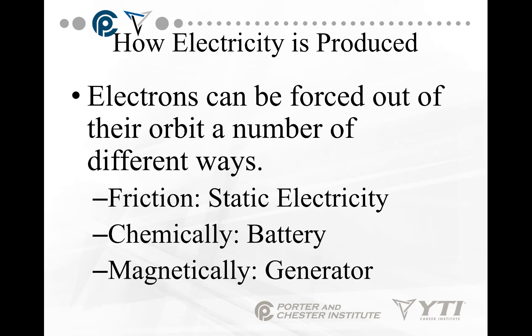Most of our mass production of electricity happens magnetically. A generator — you spin a coil of wire around a magnet or two, and that coil of wire will pick up the magnetic energy. It excites the electrons, and the electrons start flowing in the wires.